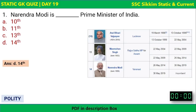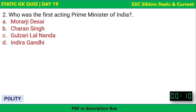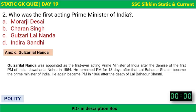Next question: Who was the first acting Prime Minister of India? The options are Morarji Desai, Jagjivan Ram, Gulzarilal Nanda, or Indira Gandhi. The correct answer is Gulzarilal Nanda. He was appointed as the first ever acting Prime Minister after the demise of Jawaharlal Nehru in 1964, and he remained PM for 13 days, after which Lal Bahadur Shastri became Prime Minister.